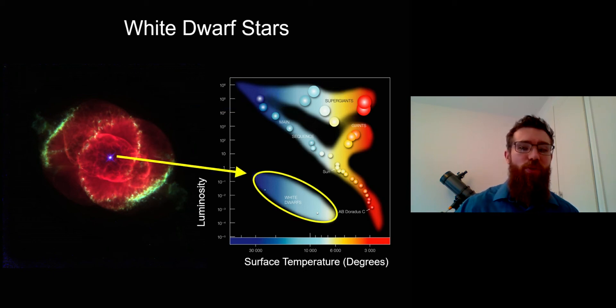That central part is a white dwarf or will become a white dwarf. Once the planetary nebula has dissipated, you're left with just the core, which is a white dwarf. They sit down here on the bottom. The reason is that they're very, very hot with very high surface temperatures, but they're very small.